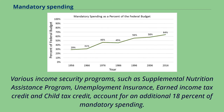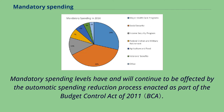Various income security programs — such as the Supplemental Nutrition Assistance Program, Unemployment Insurance, Earned Income Tax Credit, and Child Tax Credit — account for an additional 18% of mandatory spending.